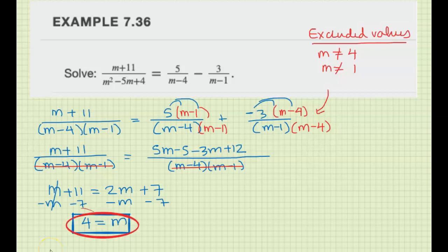So what this means is that although all the work is correct, this is not a solution. This equation has no solutions at all. You did get m equals 4, but if you plug it in to check it, you're going to get 5 divided by 0, and it doesn't work. So you have to cross it out.